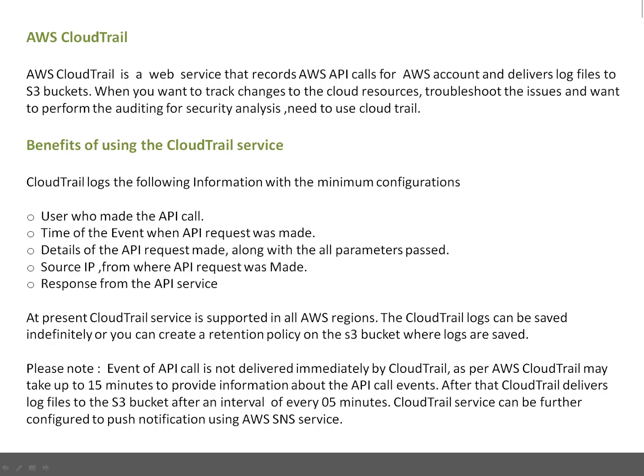First of all, friends, we need to know what is CloudTrail. AWS CloudTrail is a web service that records AWS API calls for an AWS account and delivers the log files to an S3 bucket. When you want to track changes to cloud resources — for example, when your EC2 instance changes its state from start to stop, or stop to terminate — you can track who created an instance, who powered it off, who created an S3 bucket, who modified or deleted an S3 bucket, who created an IAM user. Everything like these are changes to cloud resources, and you can track those with CloudTrail.